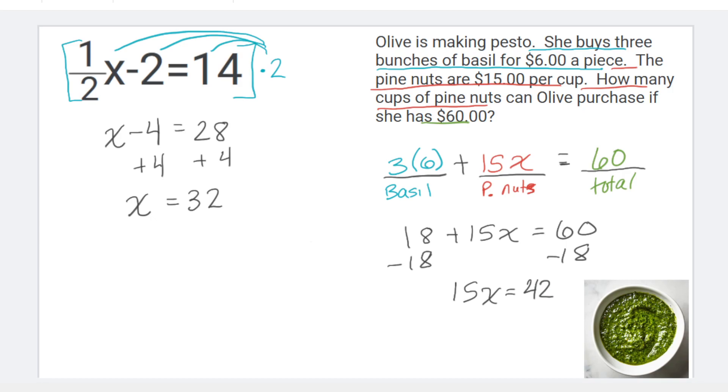Now here, a number and a letter touching is multiplication. So to unmultiply this, I'm going to divide both sides by the 15.